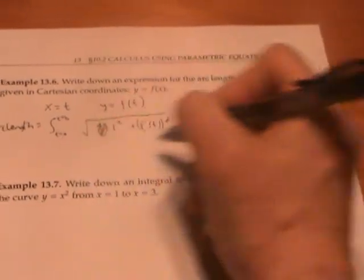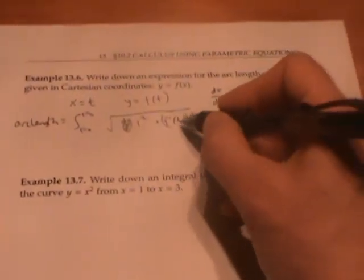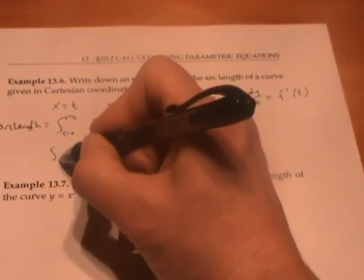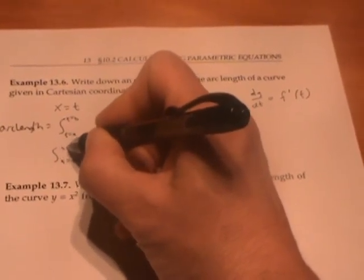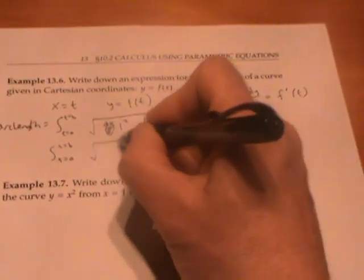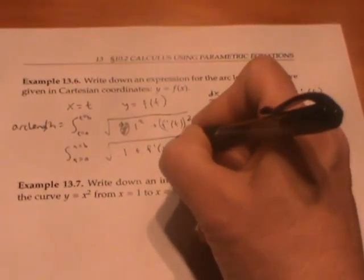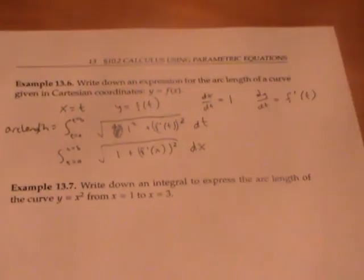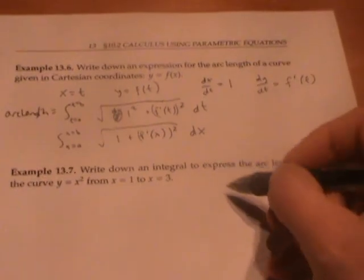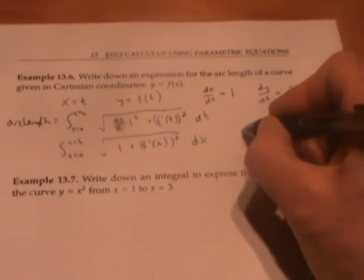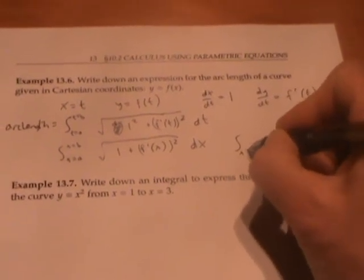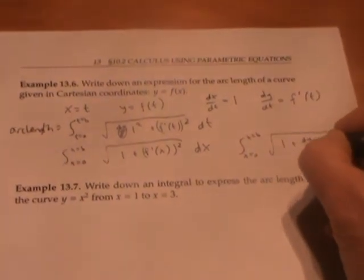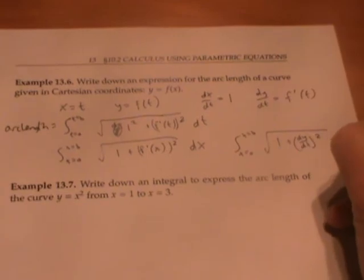A lot of times this is written—I can do a change of variables here—instead of using t as my variable, I can rewrite this using my original x. It's the same integral, just a different variable. This is often written as the integral from x equals a to x equals b of the square root of 1 plus (dy/dx)² dx.